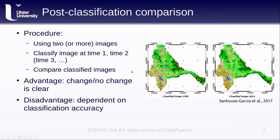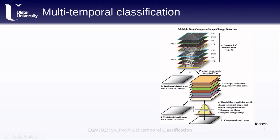The disadvantage is that this approach is highly dependent on classification accuracy. If we have two image classifications that are not particularly accurate, there's going to be a lot of noise, and it's going to be very difficult to correctly compare those two classifications or draw as much information out of them.